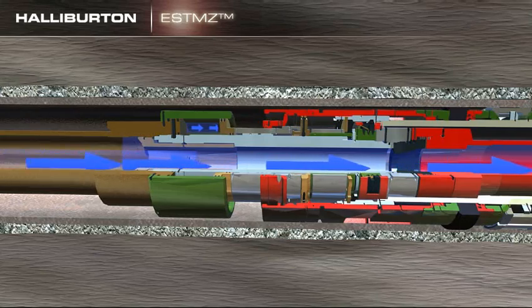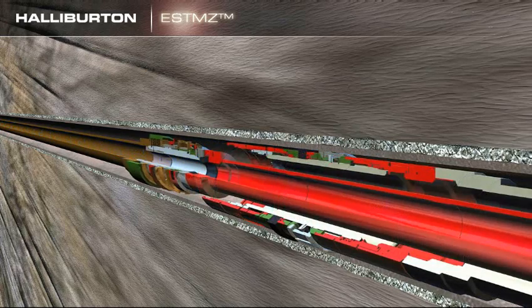Surface lines are rigged up and pressure is applied to set the Versatrieve packer. Once the upper Versatrieve packer is set and tested, the service tool is released.